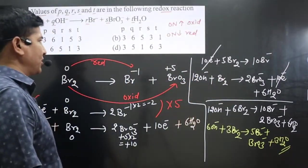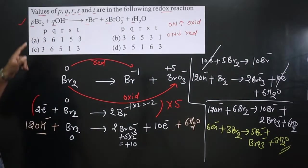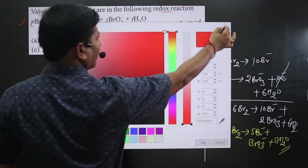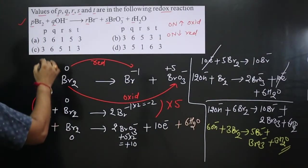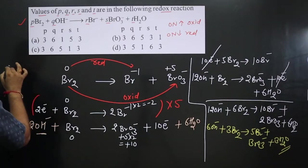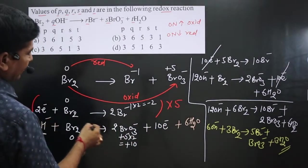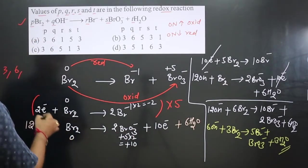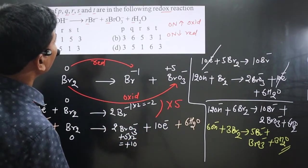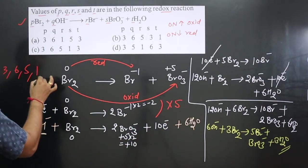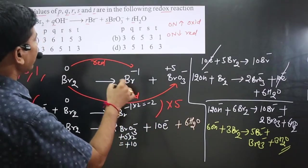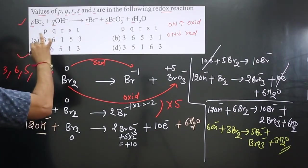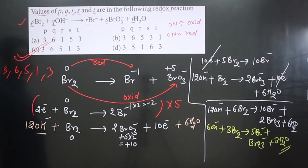This is the balanced equation. Reading off the coefficients one by one: Br₂ = 3, OH⁻ = 6, Br⁻ = 5, BrO₃⁻ = 1, H₂O = 3. So P=3, Q=6, R=5, S=1, T=3. Option C is correct.